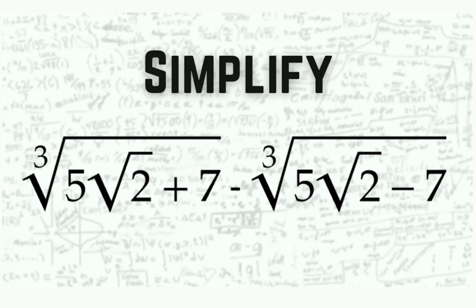Simplify this expression: cubic root of 5 times square root of 2 plus 7 minus cubic root of 5 times square root of 2 minus 7.